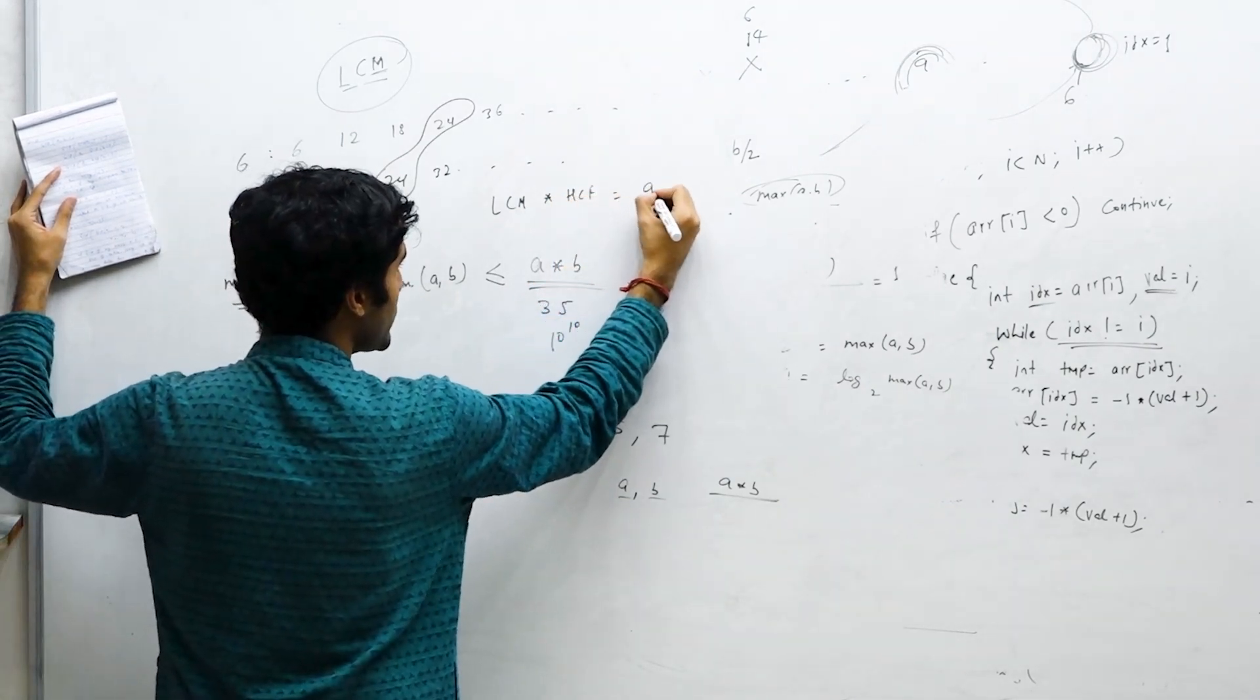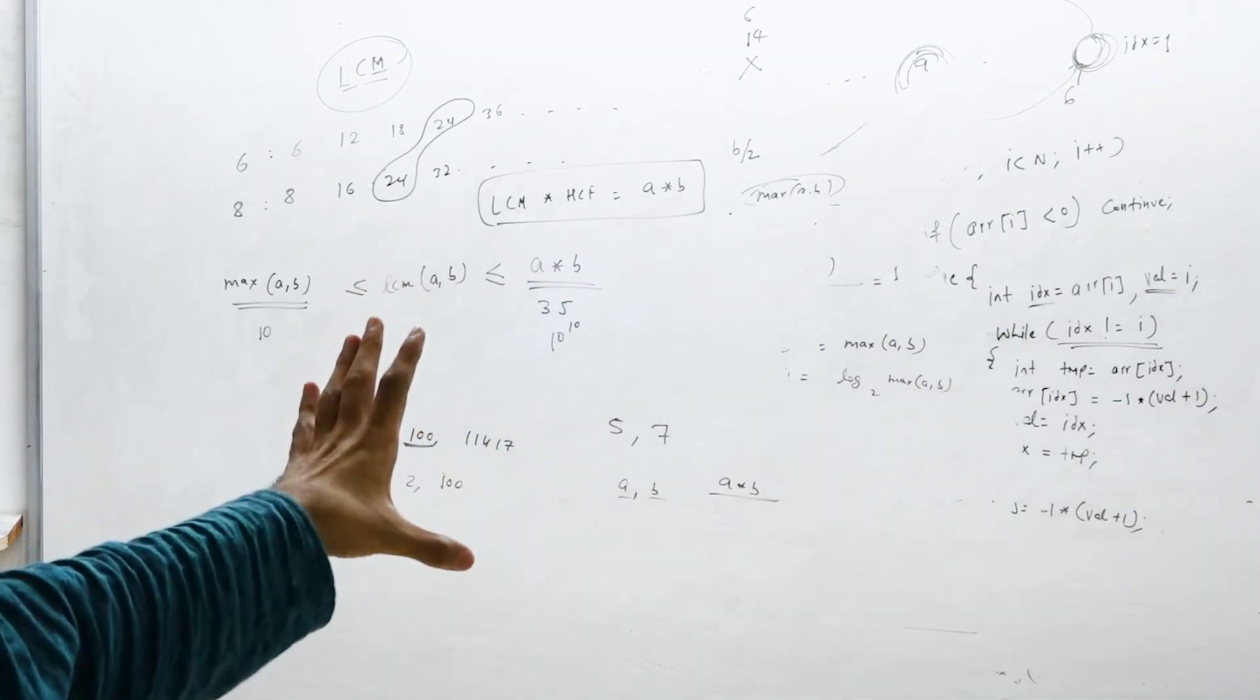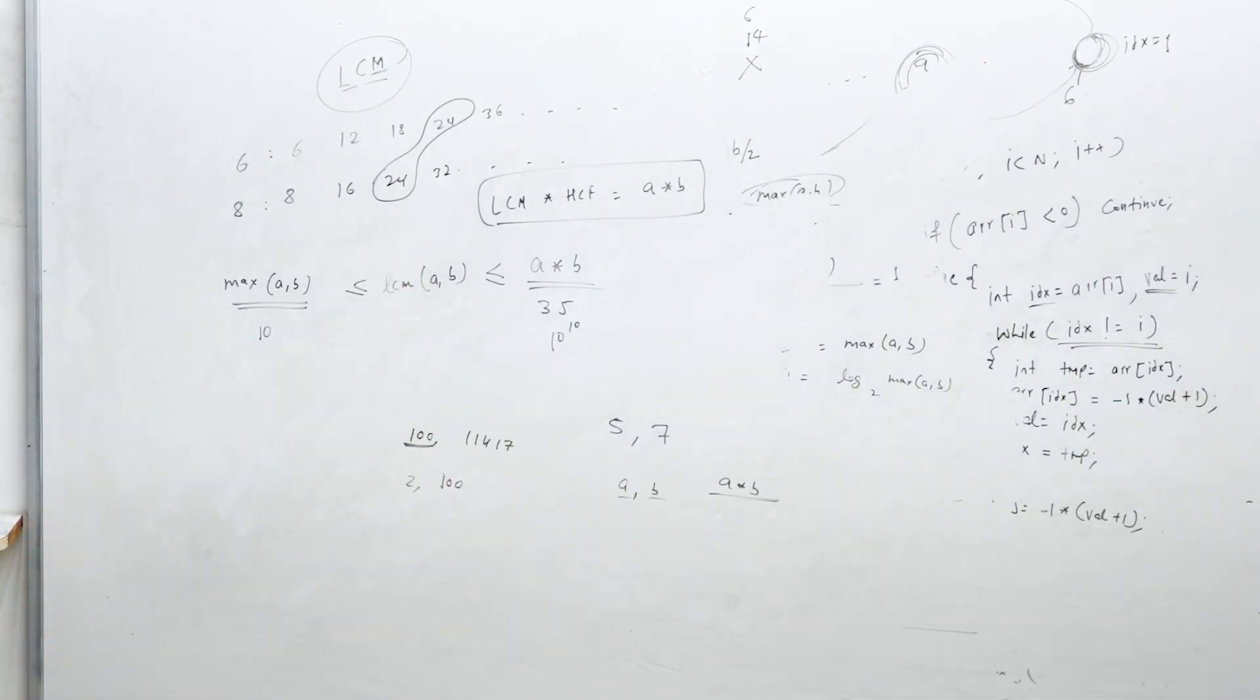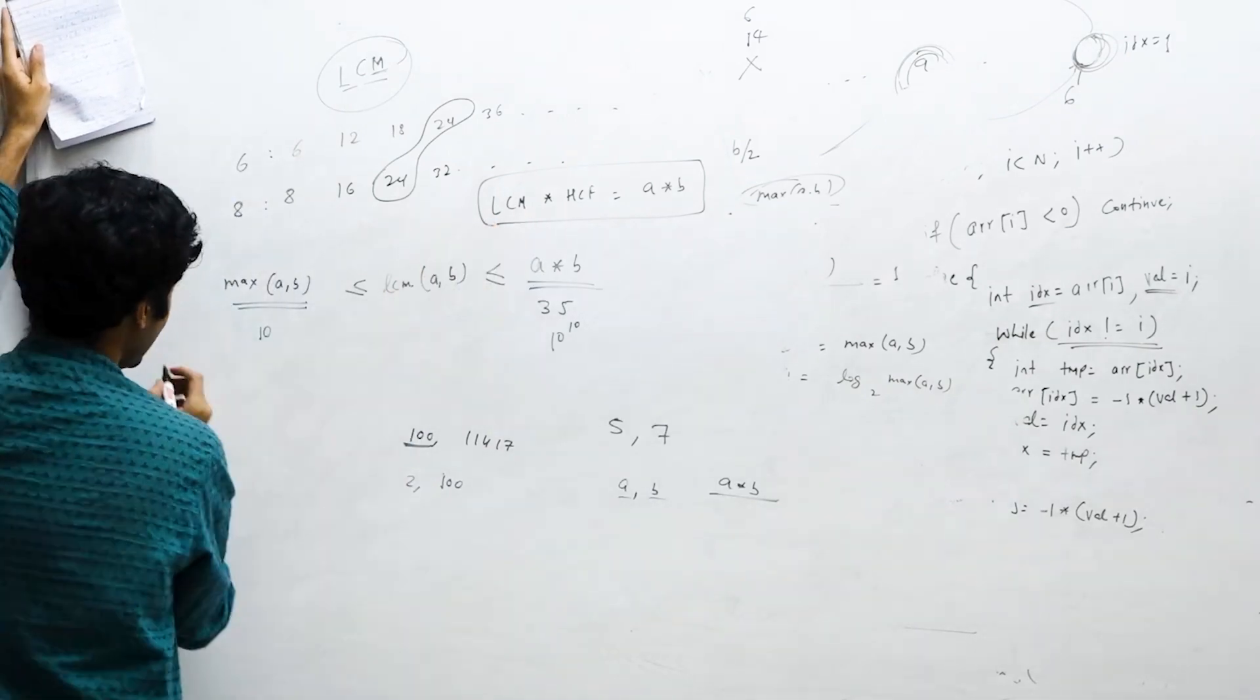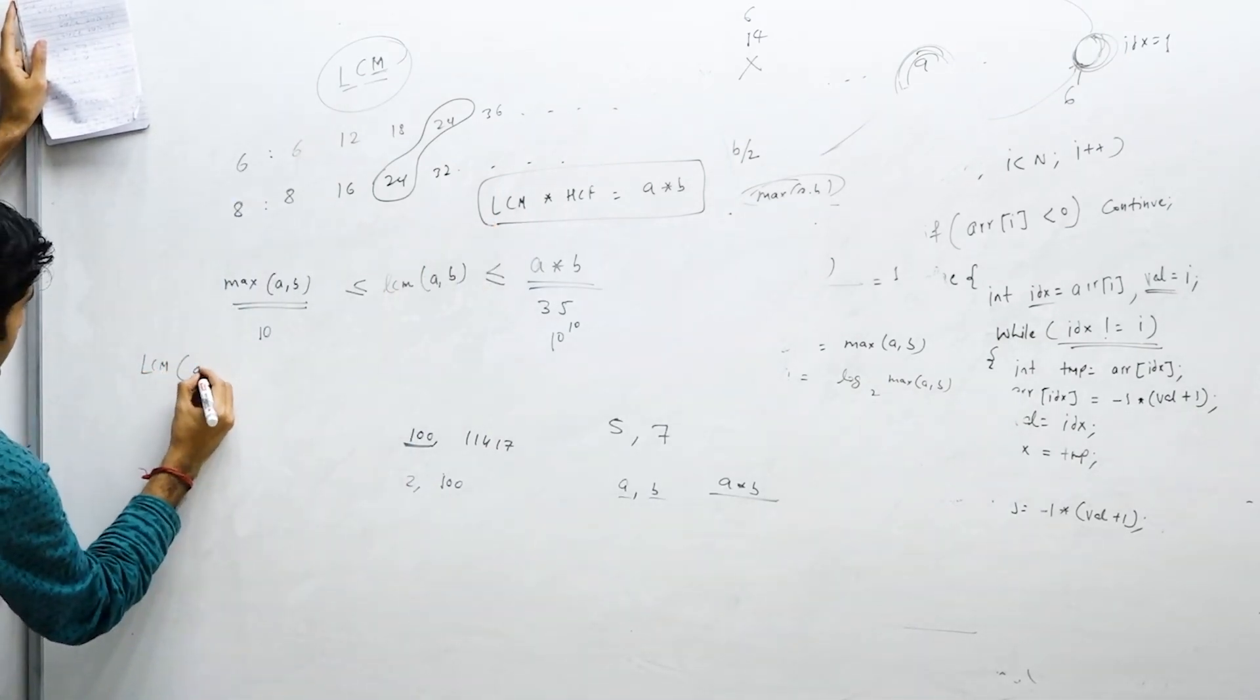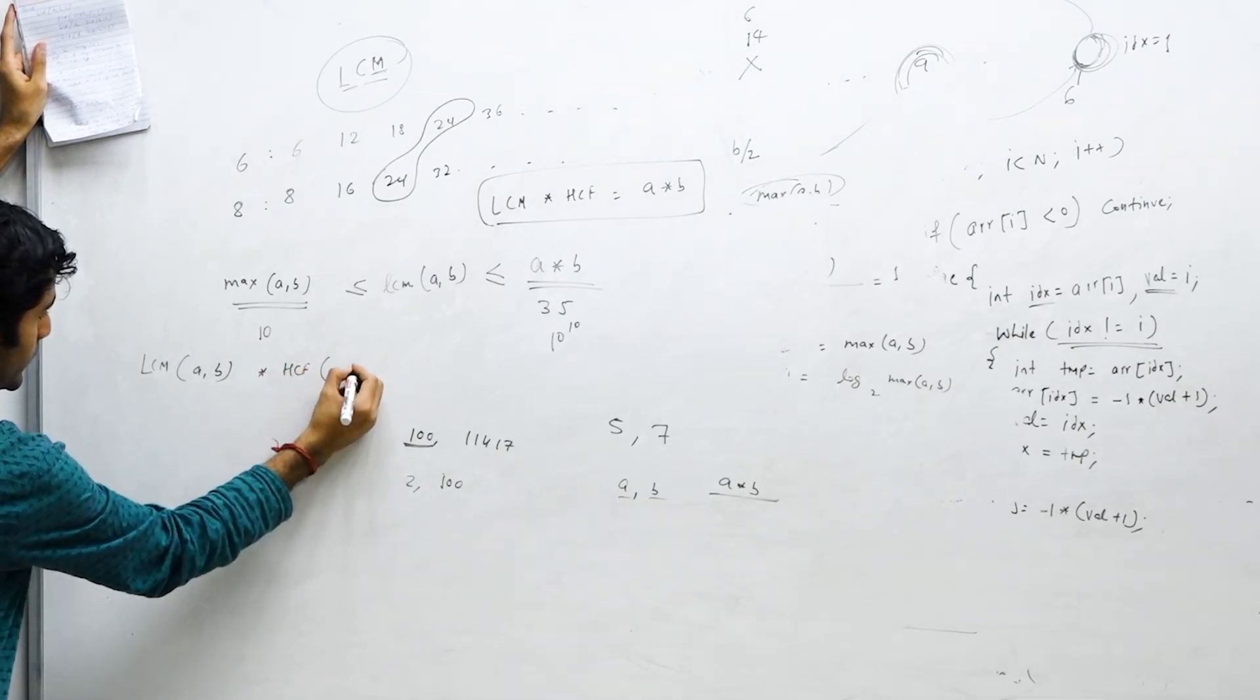Here you can use one very simple equation which says that LCM of two numbers into HCF of two numbers is basically product of two numbers, which is a into b. This is a very standard expression that you should be very aware of.